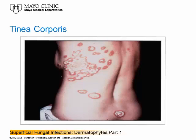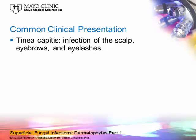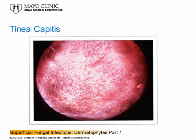Tinea capitis is infection of the scalp, eyebrows, and eyelashes. It primarily occurs in young children before puberty. A slide shows a child's scalp with alopecia — patchy hair loss — which may be the only symptom. In some cases lesions become more severe, going deeper into tissue. Secondary bacterial infection can cause folliculitis requiring antibiotic treatment.